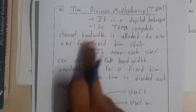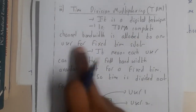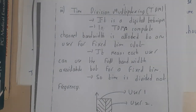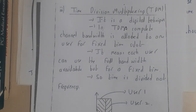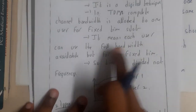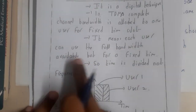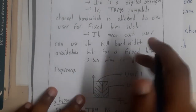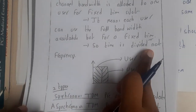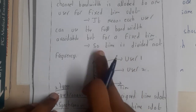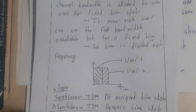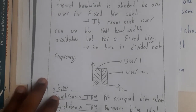In TDMA, the complete channel bandwidth is allotted to one user — the channel bandwidth or frequency is kept constant for everyone, but time is divided. Each user can use the full bandwidth available but only for a fixed amount of time. So time is divided, not frequency.